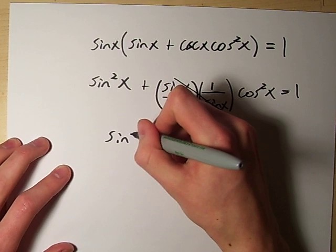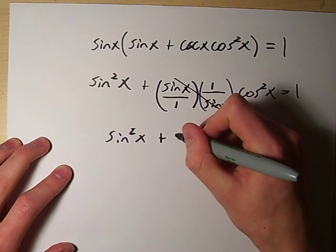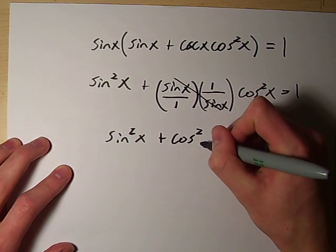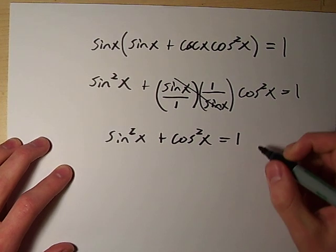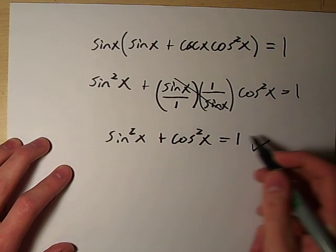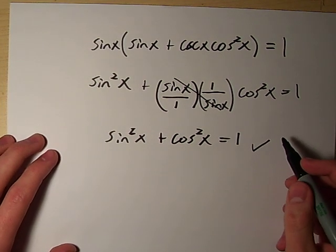And when we multiply this through, we get sine over sine, these cancel out, so we end up with sine squared x plus cosine squared x equals 1, which is true and it's just our fundamental Pythagorean identity.